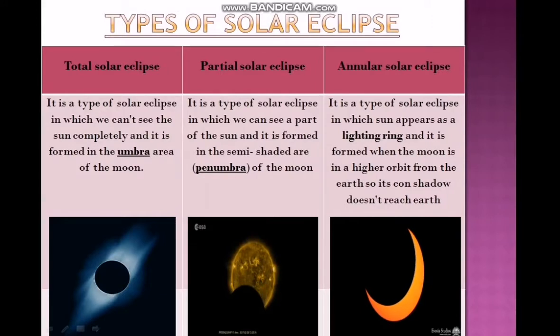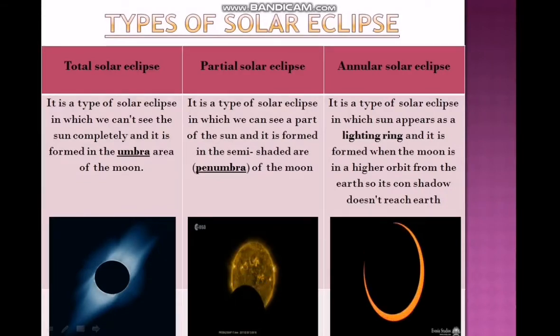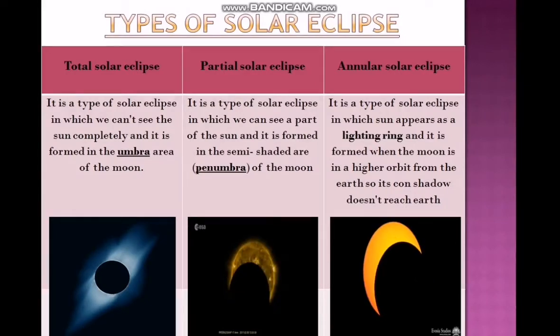The second type: partial solar eclipse. It is a type of solar eclipse in which we can see a part of the Sun, and this is formed in the semi-shaded area, which is penumbra. Like this, we can see part of the sunlight only.